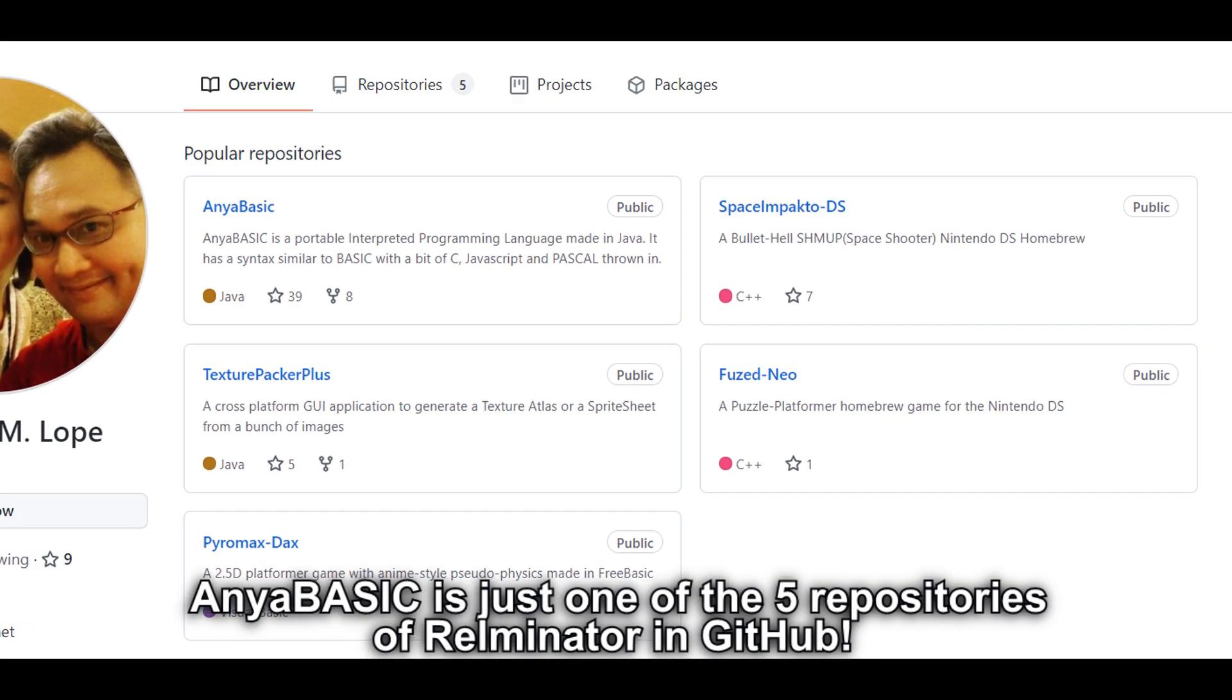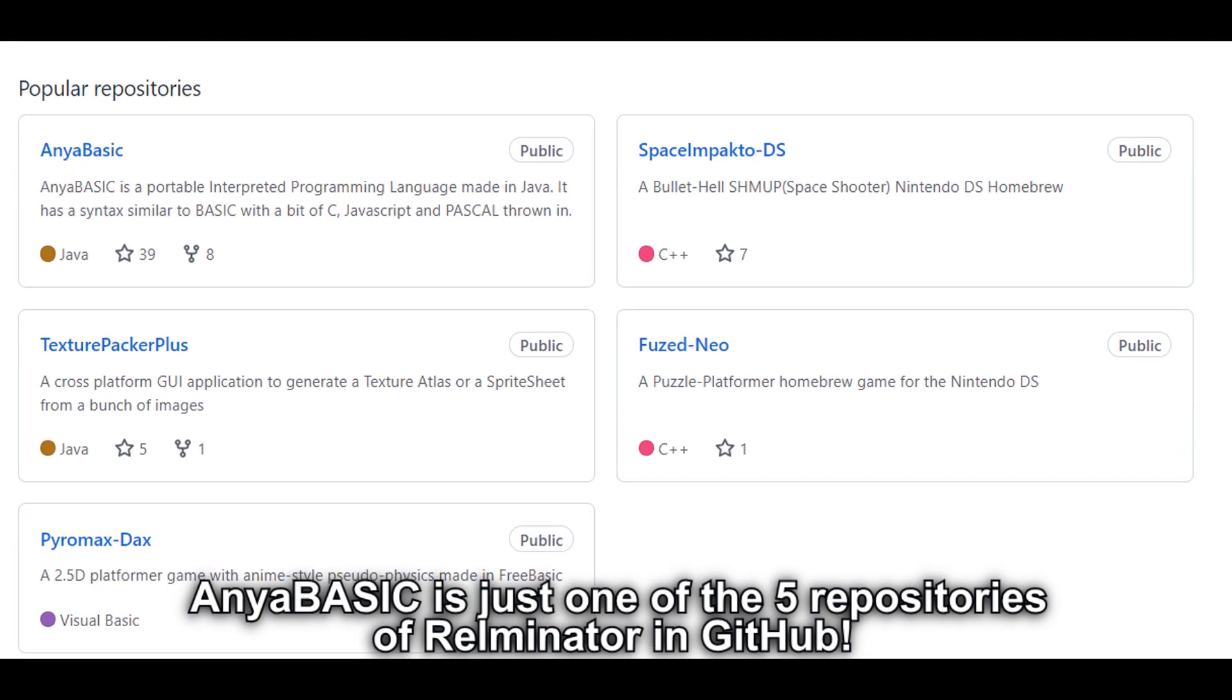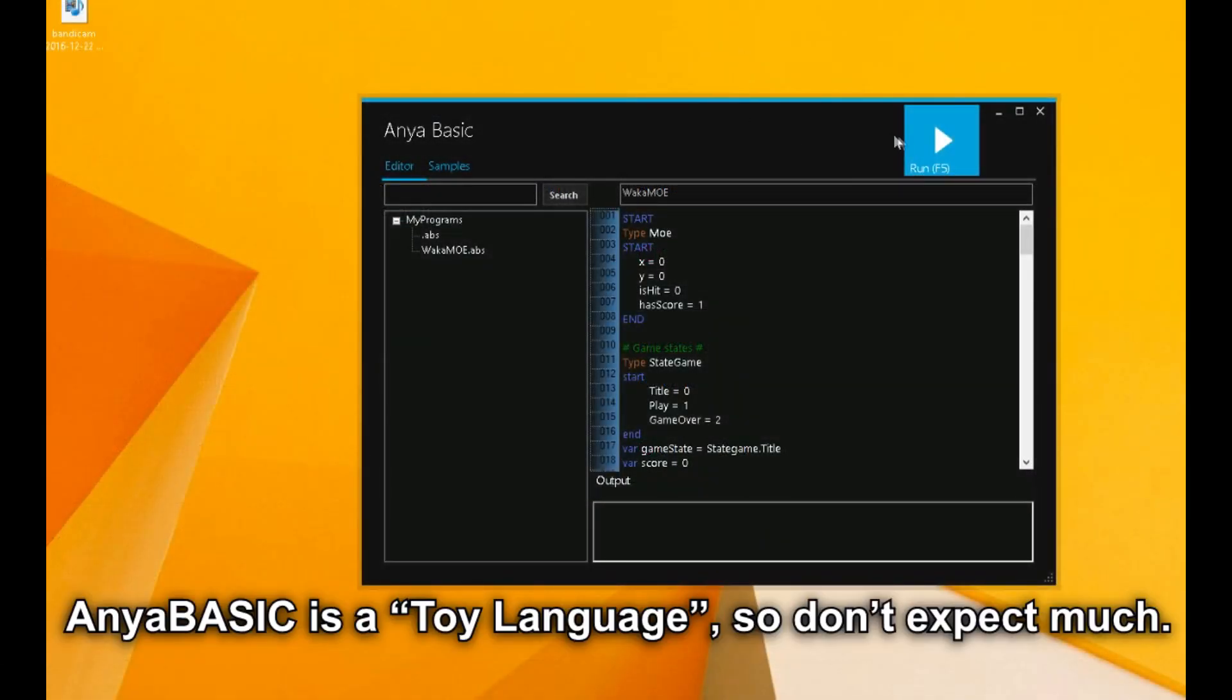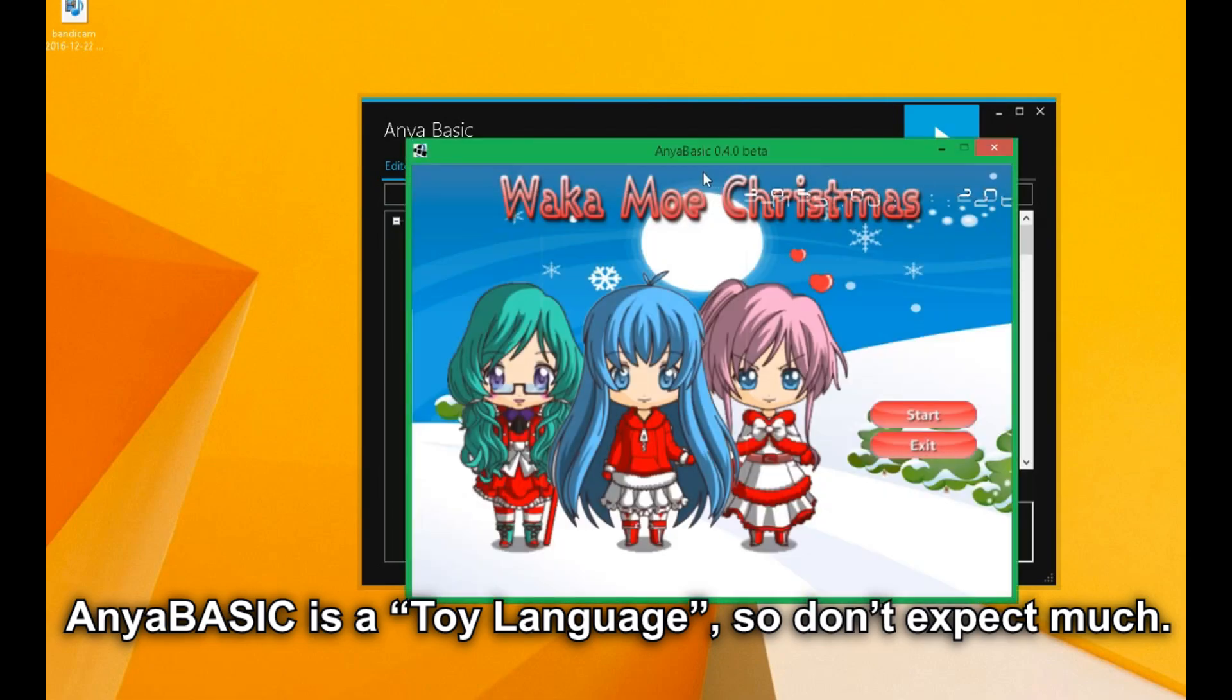Anya Basic is just one of the five repositories of Relminator in GitHub. Anya Basic is a toy language, so don't expect much.